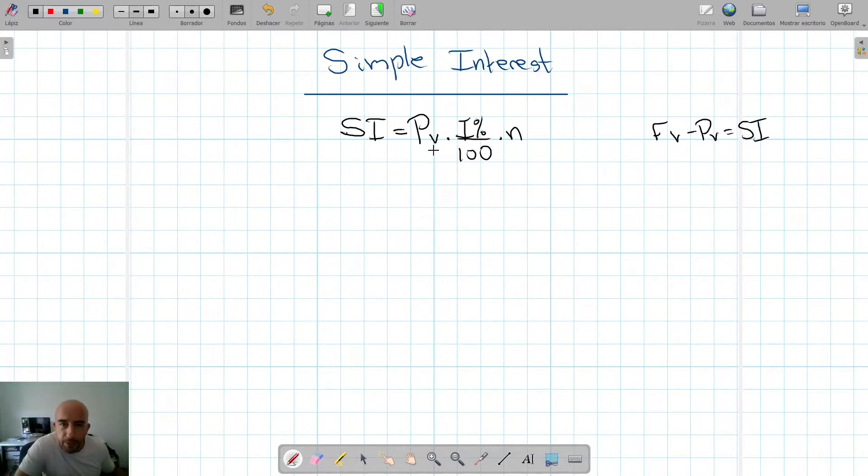Just to remind you, if we have an initial value or principal value, we will calculate once this percentage of interest of that principal value and then every year or every period we will add up that same simple interest, that same amount. So that's why the total amount after N years would be that interest times the number of years.